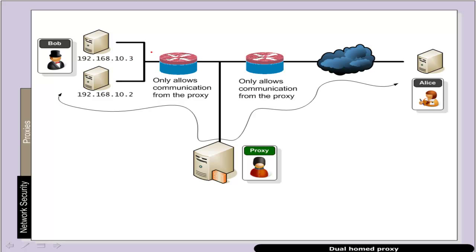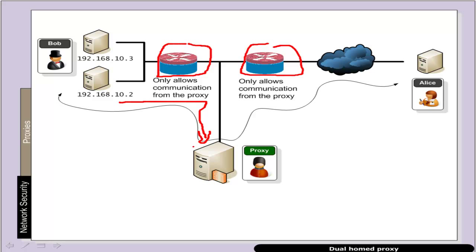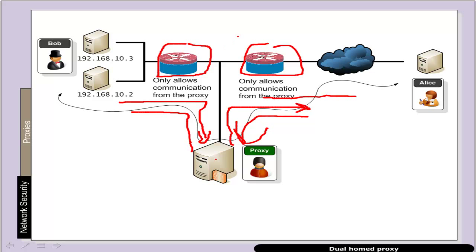We can improve this further with a dual-homed system — a firewall on either side. Communications are only allowed through the outer firewall if they go to the proxy, and communications back come only from the proxy. On the internal side, communications are only allowed through if they come from the proxy and vice versa. This is a highly secure system — Bob must authenticate himself to the proxy to allow communications out.